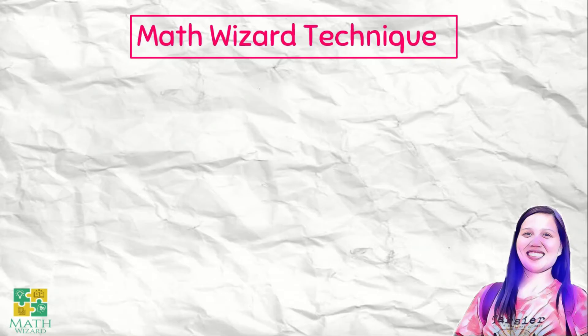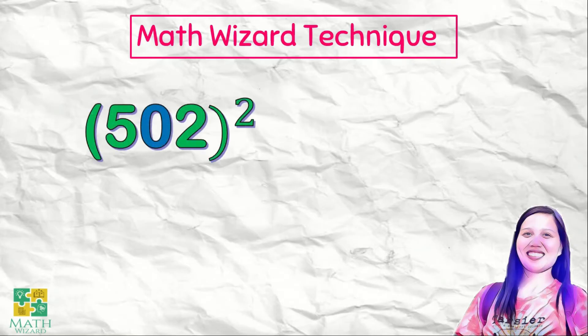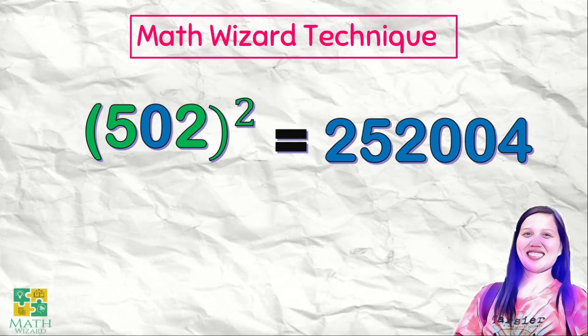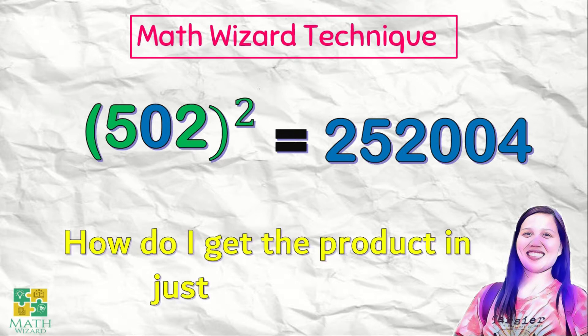Let me try this one. The square of 502 is 252,004. Let me check if my answer is correct. My answer is correct. Therefore, the square of 502 is 252,004. The question is, how do I get the product in just five seconds? If you want to know, just keep on watching.